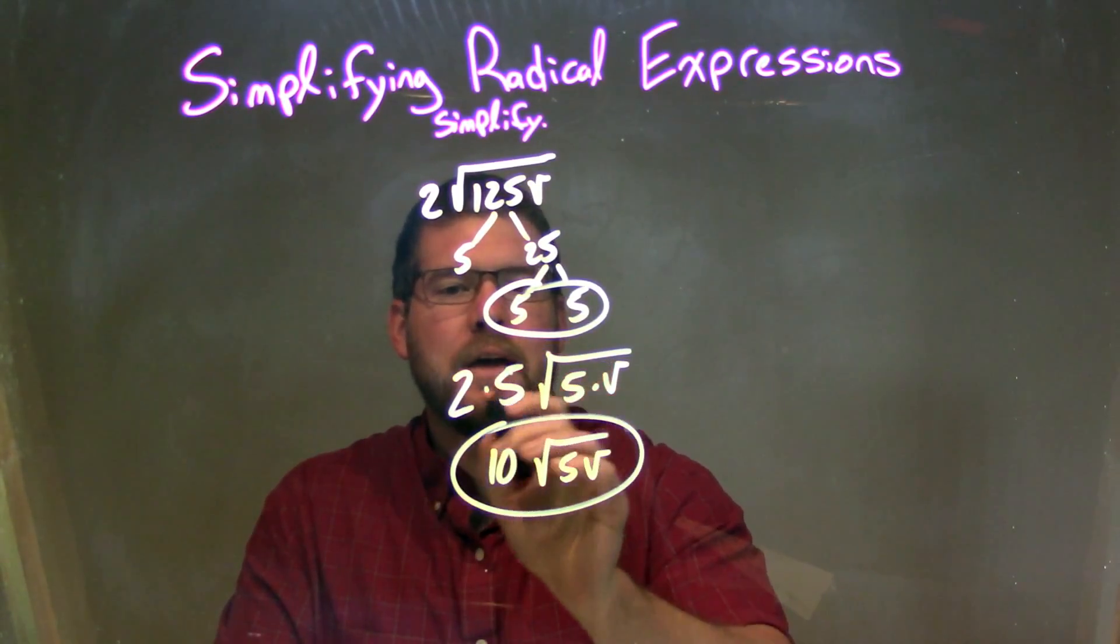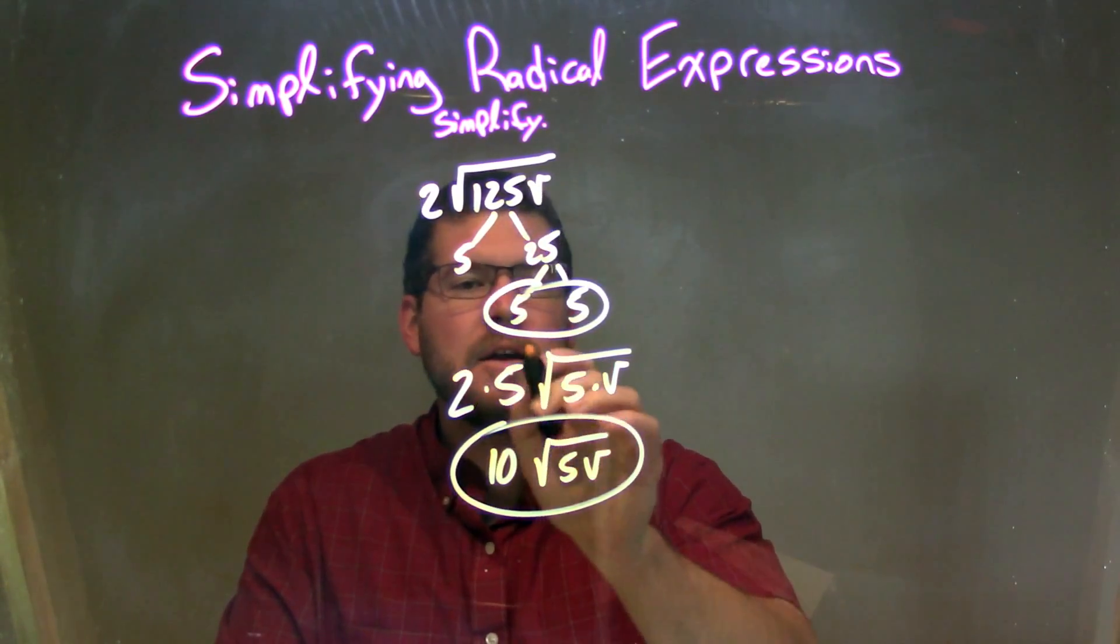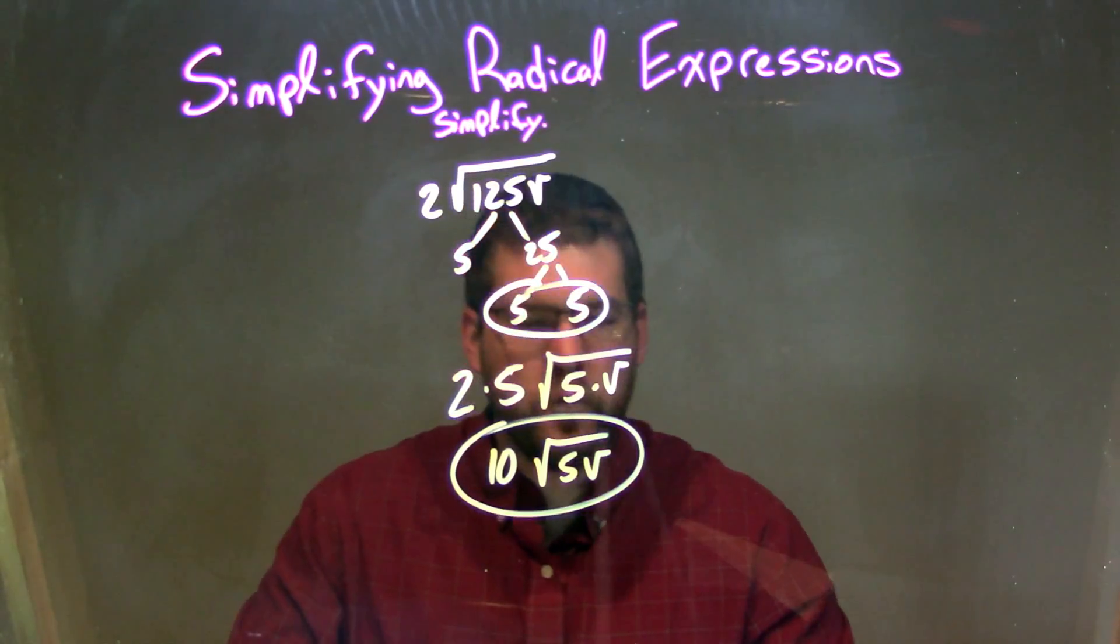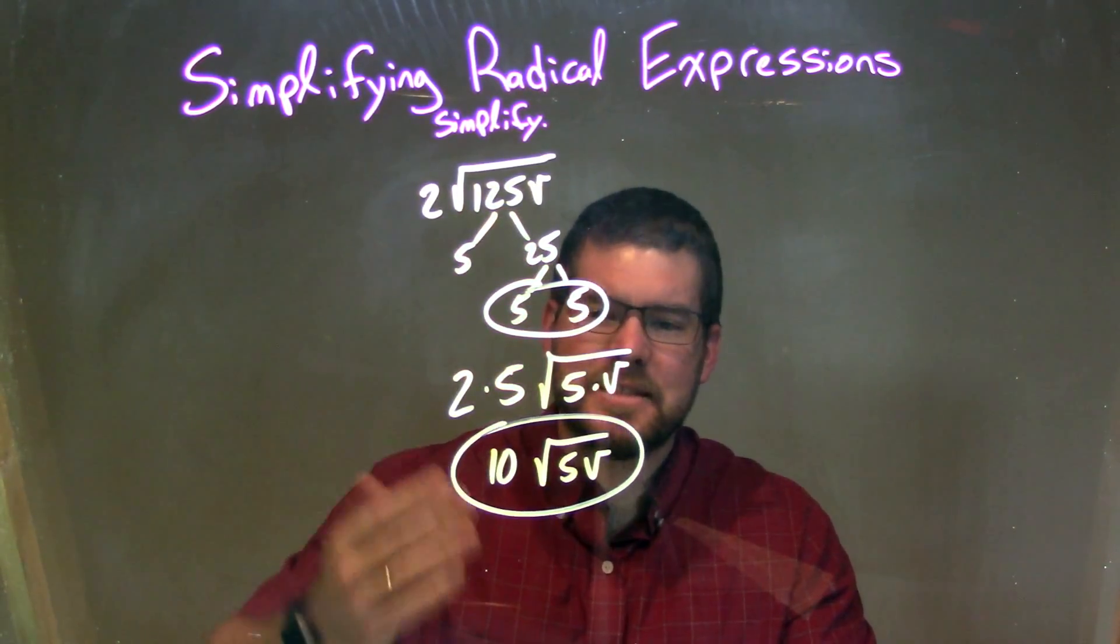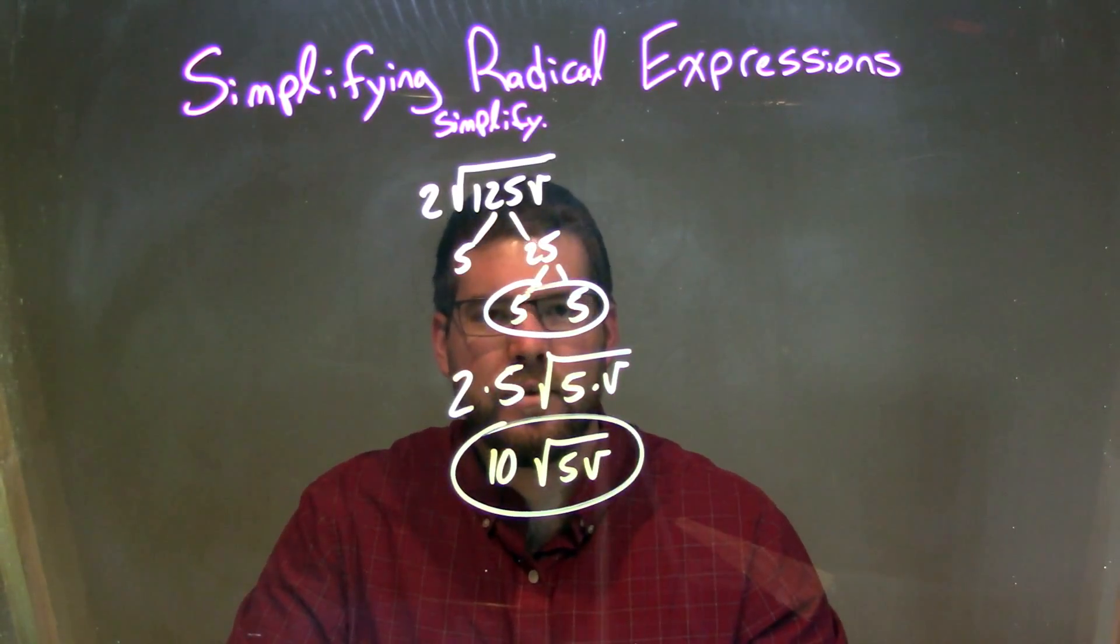And so we had 2 times 5 on the outside, 10 to the square root of 5 times V. Simplify that. We've got our final answer here, which is 10 times the square root of 5V.